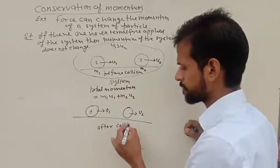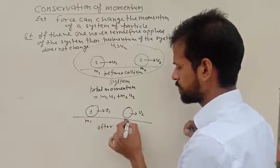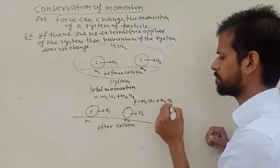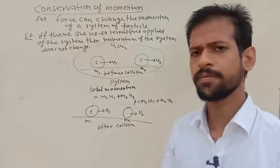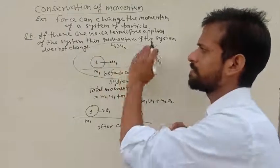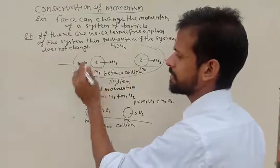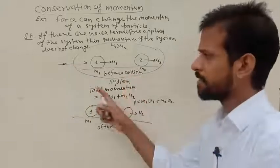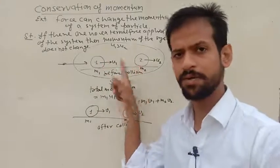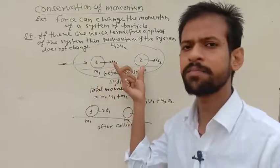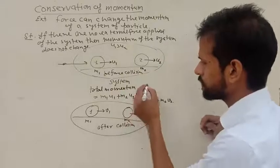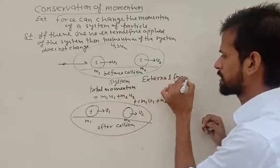After the collision, particle one moves with velocity V1 and particle two moves with velocity V2. The total momentum of the system after collision is M1V1 plus M2V2. Now, the particles apply force on each other, but this is internal force because both particles are members of the system. If a force is applied from outside, that is external force. But forces between the two particles are internal forces. So for this system, external force is zero.